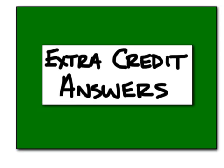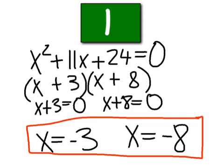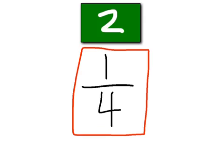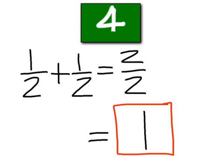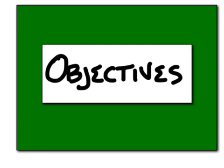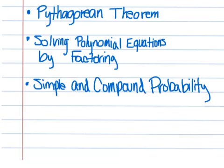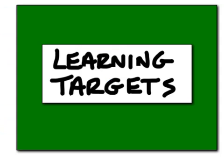Go ahead and bring up the extra credit from yesterday if you did it. Number one should be negative 3, negative 8. 2 should be 1 fourth. 3 should be 1 half. And 4 should be 1. Our objectives for today: we're going to be doing the Pythagorean theorem, factoring polynomial equations, and doing simple and compound probability.